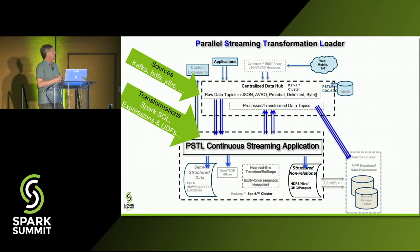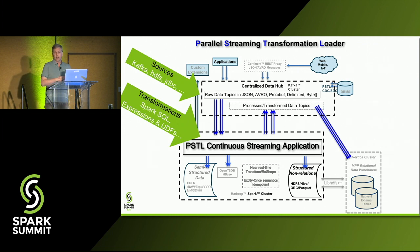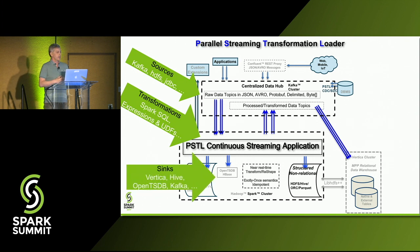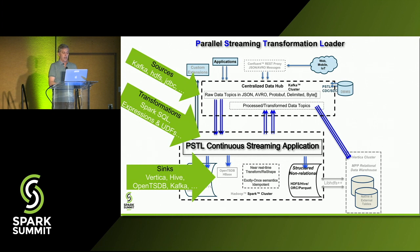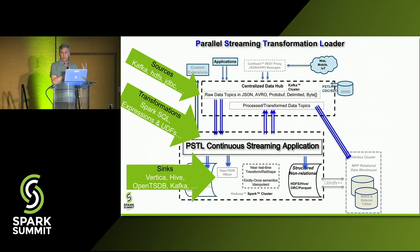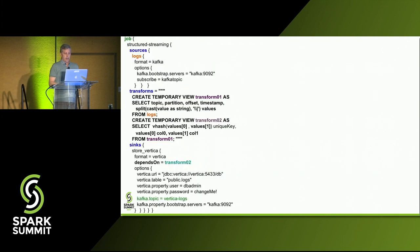We use high-performance equivalents of user-defined functions called Catalyst Expressions, which I'll talk about in a minute. We support syncs for writing data through the pipeline into Vertica, into Hive, Parquet format, columnar formats. If you have time series aggregate data, you can write through OpenTSDB into HBase. You can also sync back onto Kafka as well — so maybe you ingest raw JSON or Avro, apply some transformations, maybe a user-defined function, and then push that back onto a new Kafka topic, and from there into Vertica.